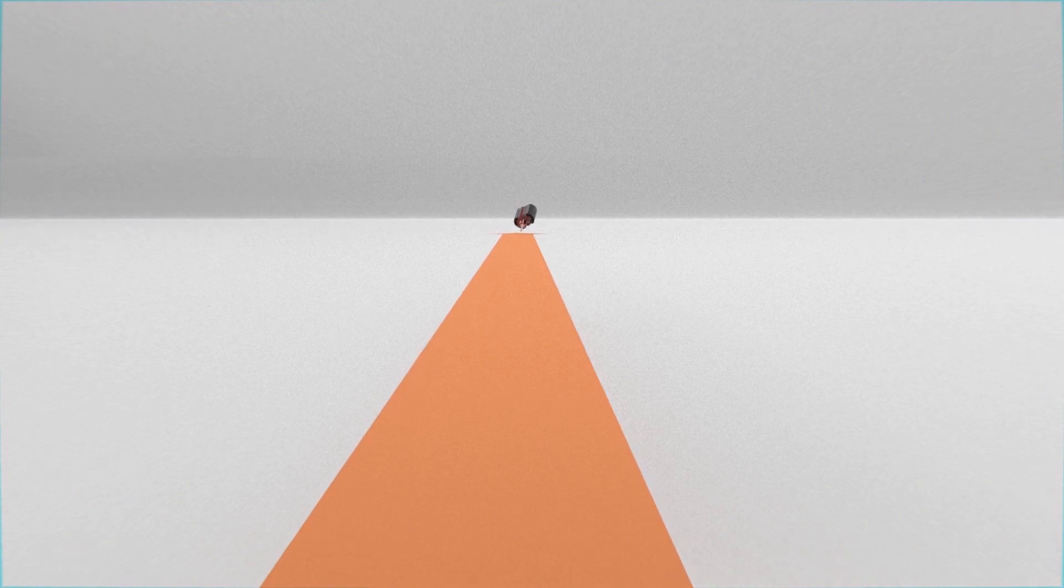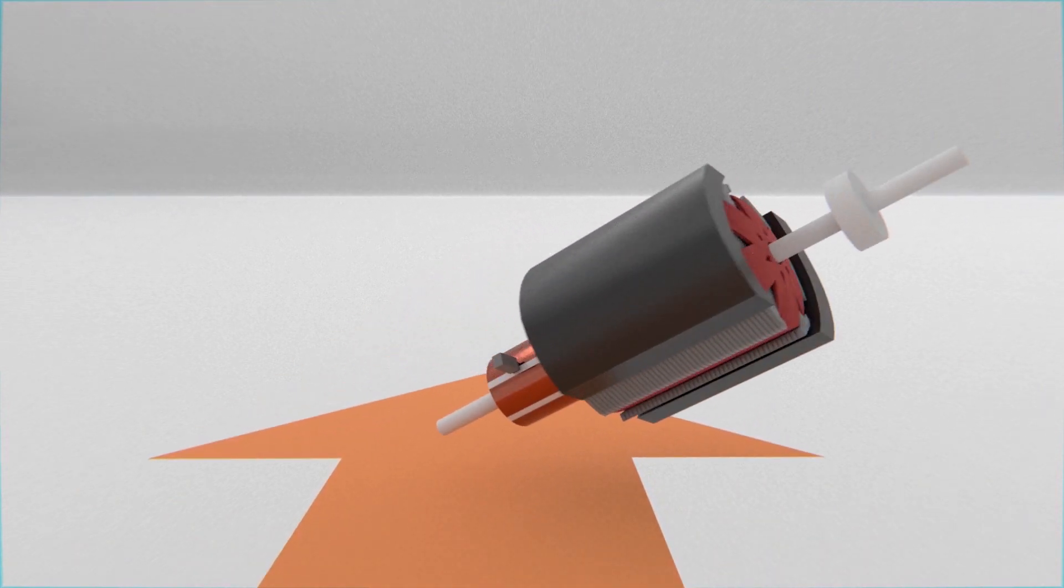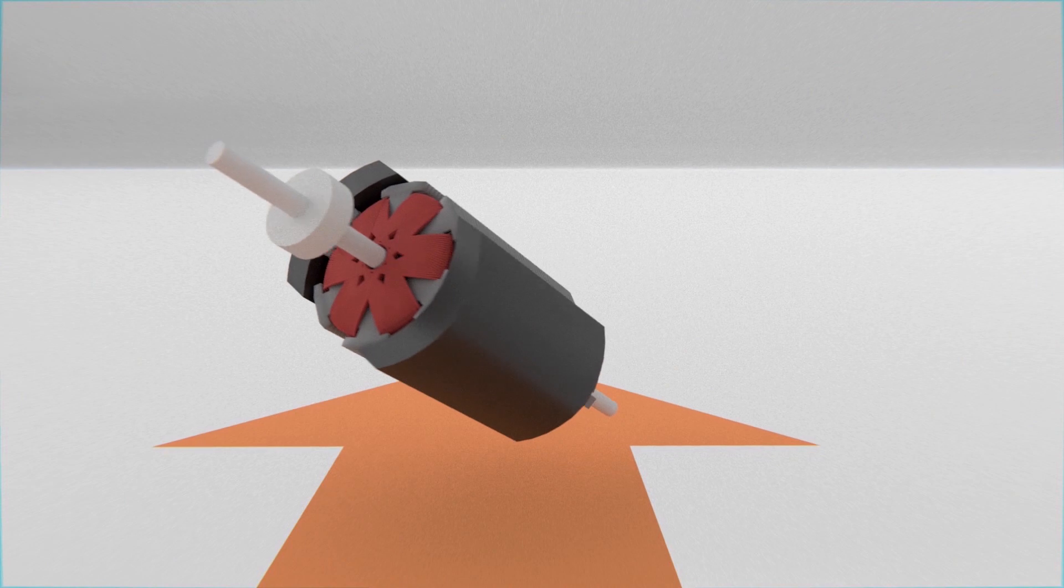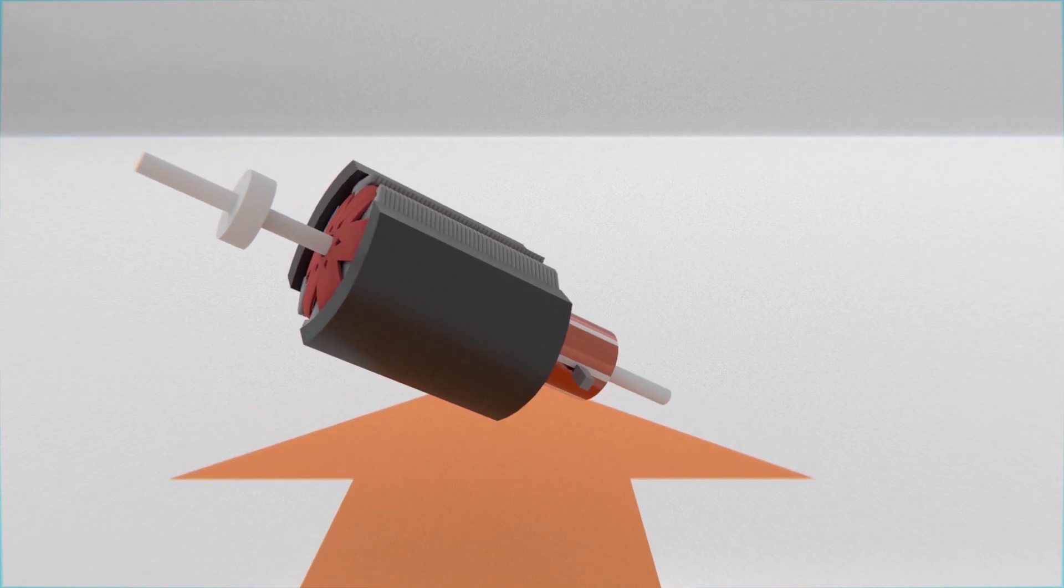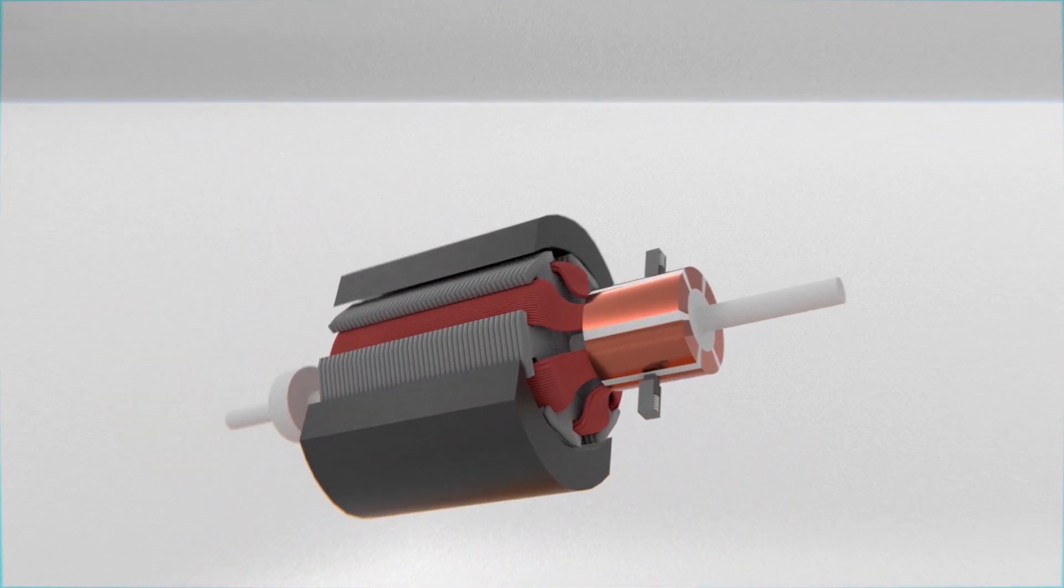Now, we are more than prepared to return to the present and see how an electric motor works today. If we take a DC electric motor, we will find the following.